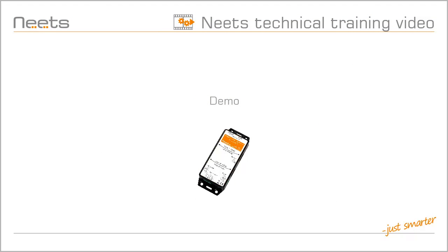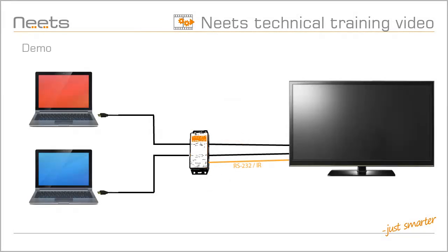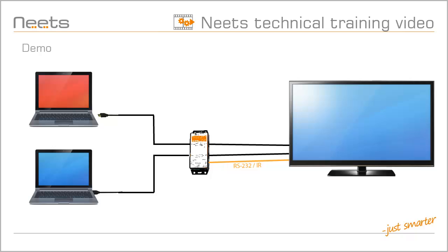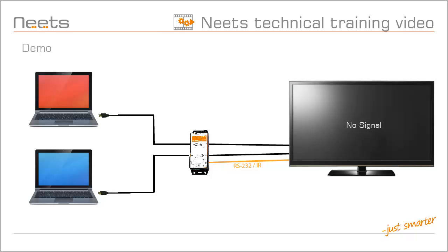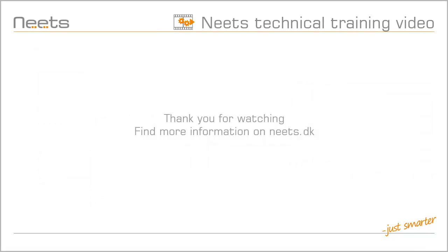Now let us see how our configuration works. Here we have the Quebec connected and two PCs ready to be connected. We plug in the first PC and the Quebec detects the signal, powers on the TV, and sets the right source. If we plug in a second PC, then the Quebec will detect a new signal and will give this priority, so it will tell the TV to switch to this source. When you disconnect both cables, it will wait 60 seconds for another signal. If there is none, then it will power down the TV. Thank you for watching. Find more information on NEETS.dk.